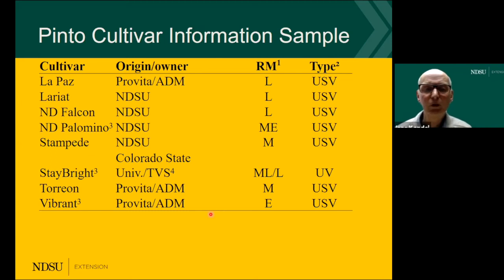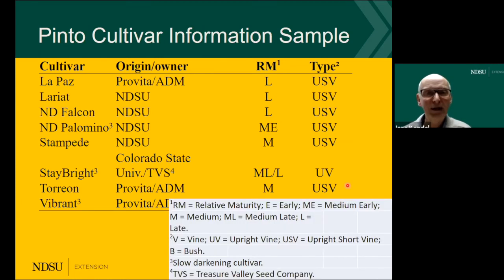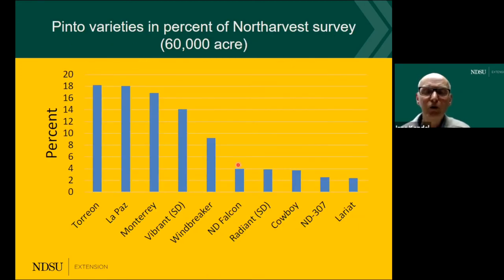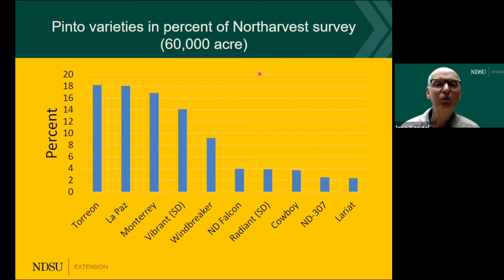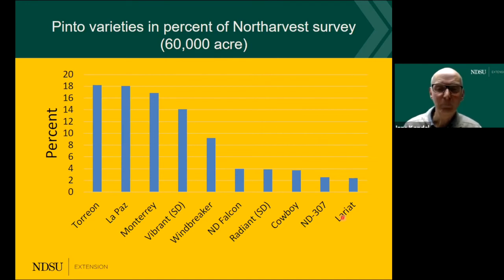Going back to the variety booklet, we typically give the name of the cultivar, relative maturity, and the type of plant growth as mentioned in earlier slides. We are moving mostly toward direct harvesting — upright or short vine types. In the 2021 survey there was a question about which variety growers are using. The pinto variety data was based on 60,000 acres — about 10 percent of total North Dakota acres. The top three pintos grown were Torrey, Laplace, and Monterey. I will show yield data later.